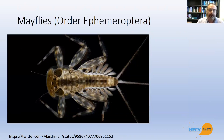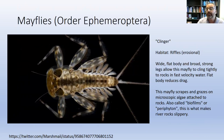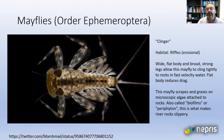Getting back to form follows function — looking at this particular mayfly nymph, you may notice some interesting characteristics. This species is adapted to live in fast-moving riffle habitat. Its body morphology is classified as a 'clinger.' It has a wide, flat body and broad, strong legs, allowing it to cling tightly in fast-velocity water. It's also dorso-ventrally compressed, keeping its body closely appressed to rocks. This particular species scrapes and grazes on microscopic algae — also called biofilms or periphyton. Any of you who have waded in a mountain stream have likely noticed how slippery rocks can be, and it's these biofilms that make them slippery.